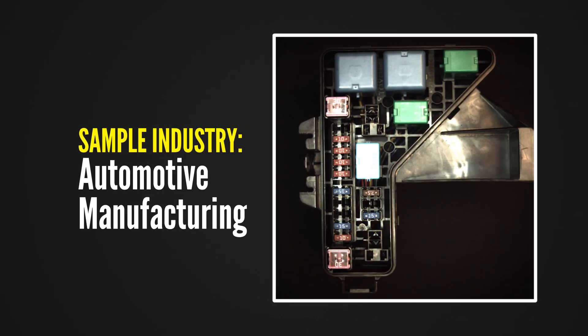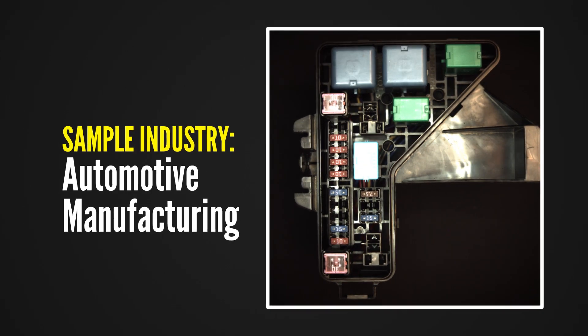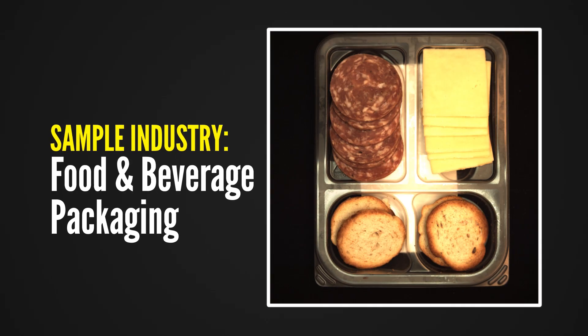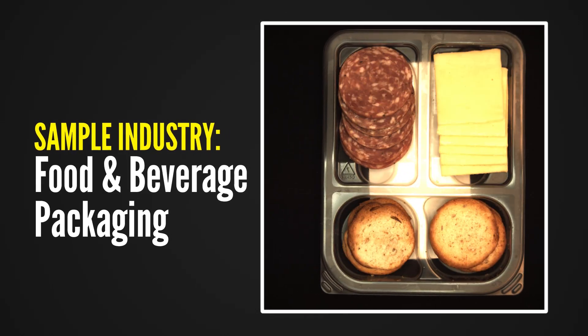Oftentimes, identical parts can appear differently to a camera. Glare can make a part look too bright, parts can be oriented in different directions, or just have too much natural variation to locate reliably with traditional rules-based vision tools.